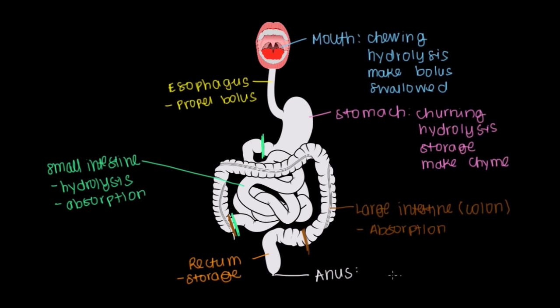And so those are all the key components of our gastrointestinal tract. There are some other accessory organs that are involved in digestion, and we'll have videos to talk about them as well. Those include things like the liver, the gallbladder, and the pancreas — and those will come up in subsequent videos.